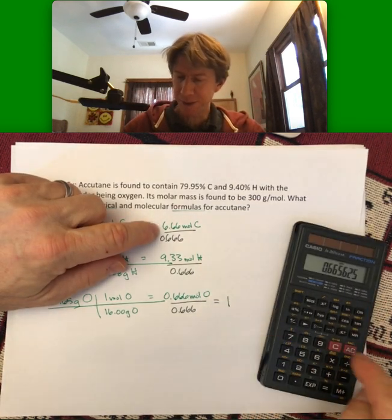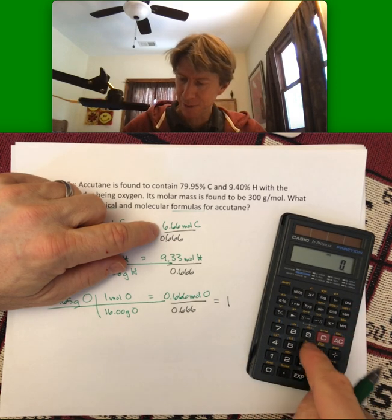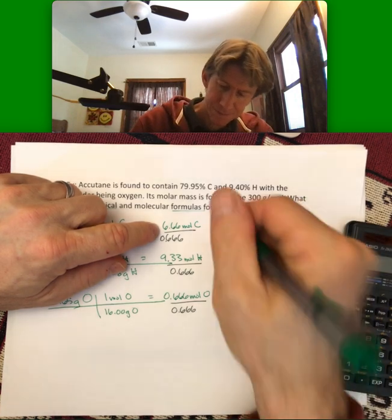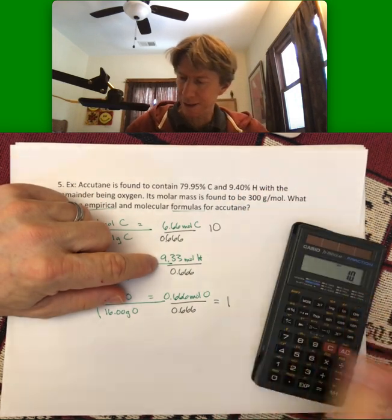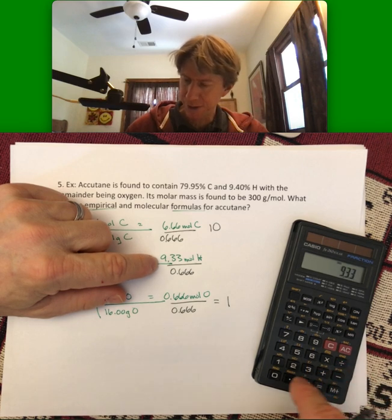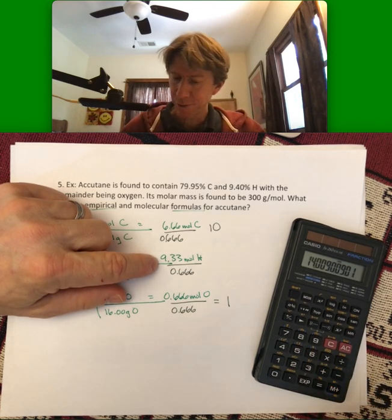So then, this one should be 10, 6.66 divided by 0.666, 10. And here, 9.33 divided by 0.666, 14.